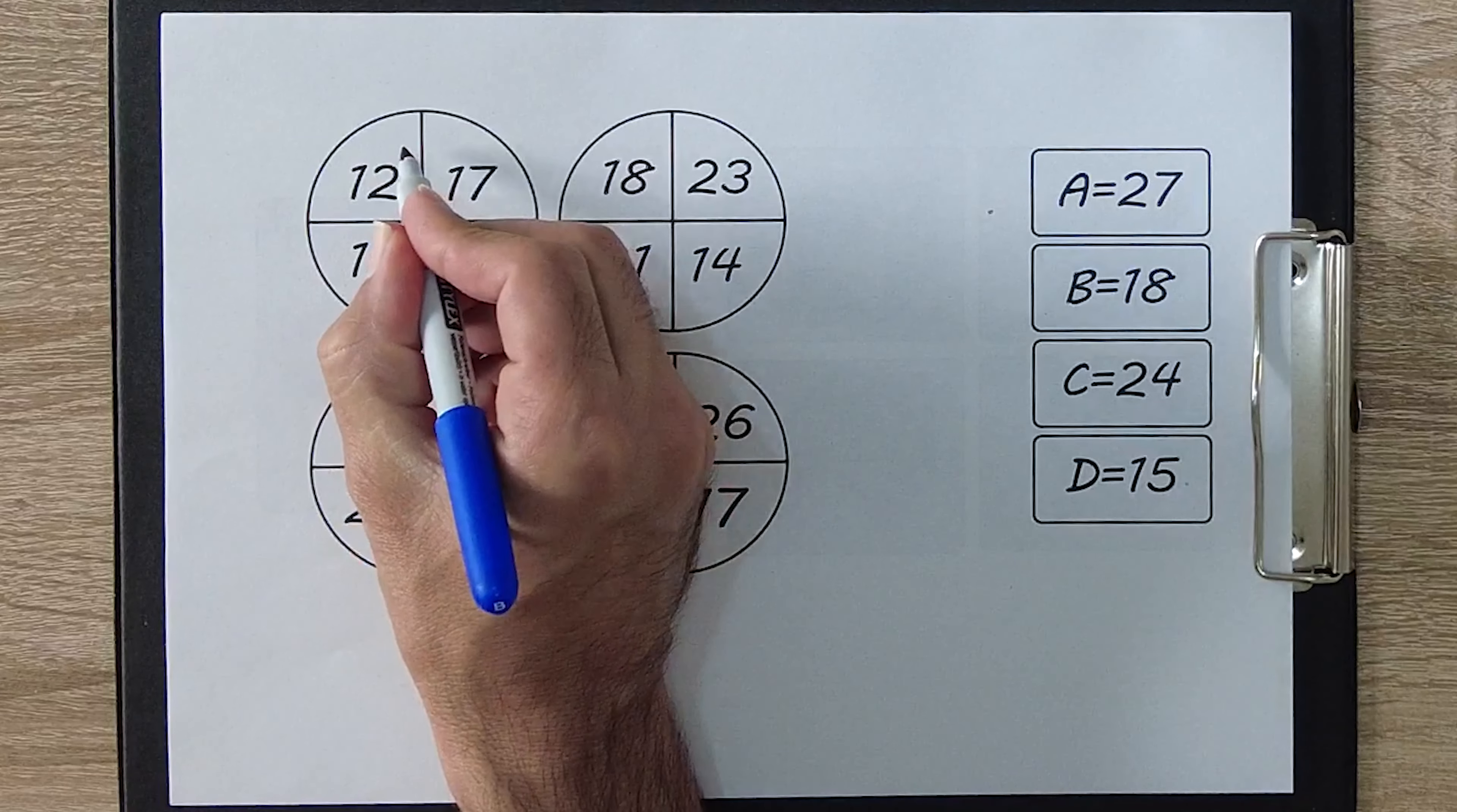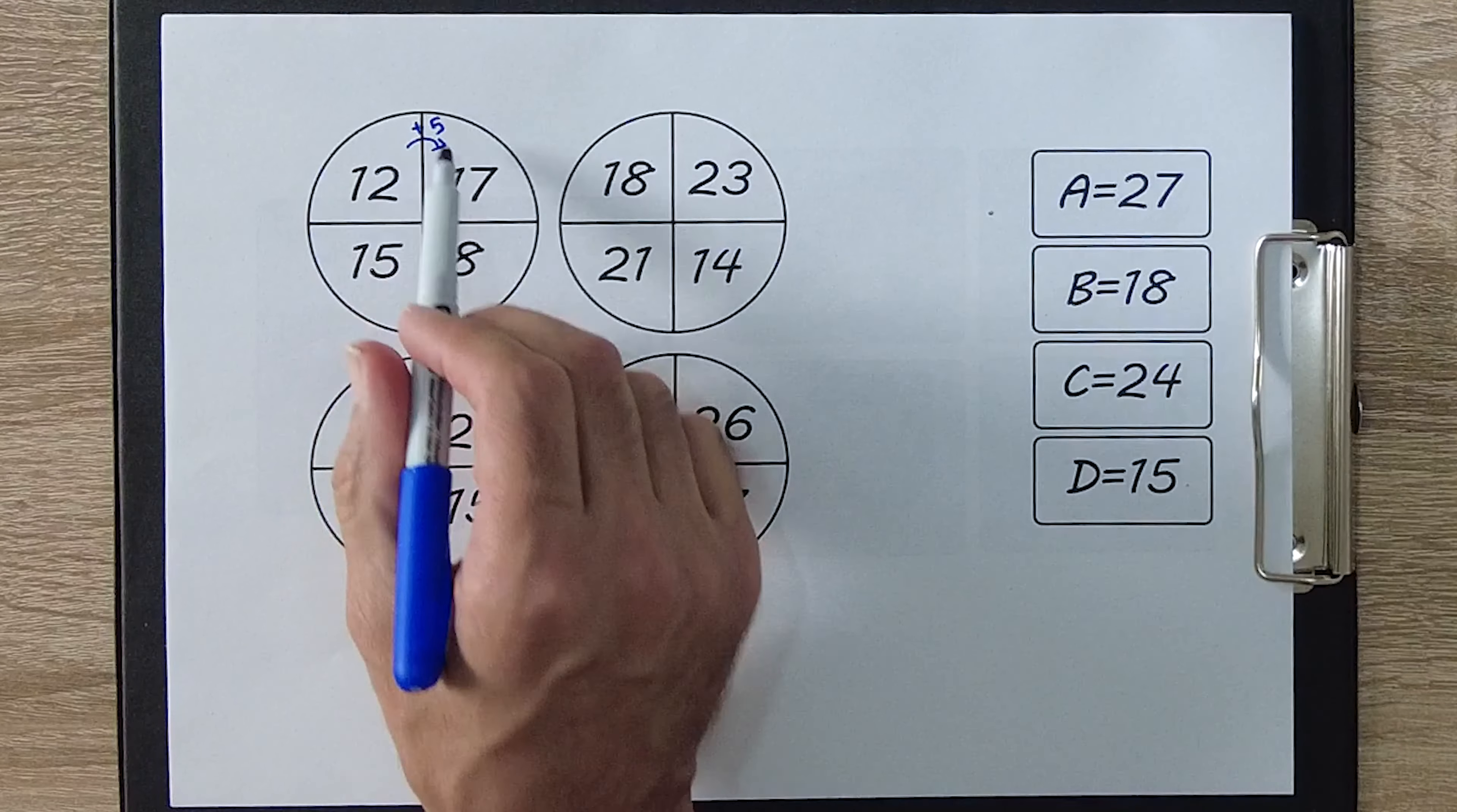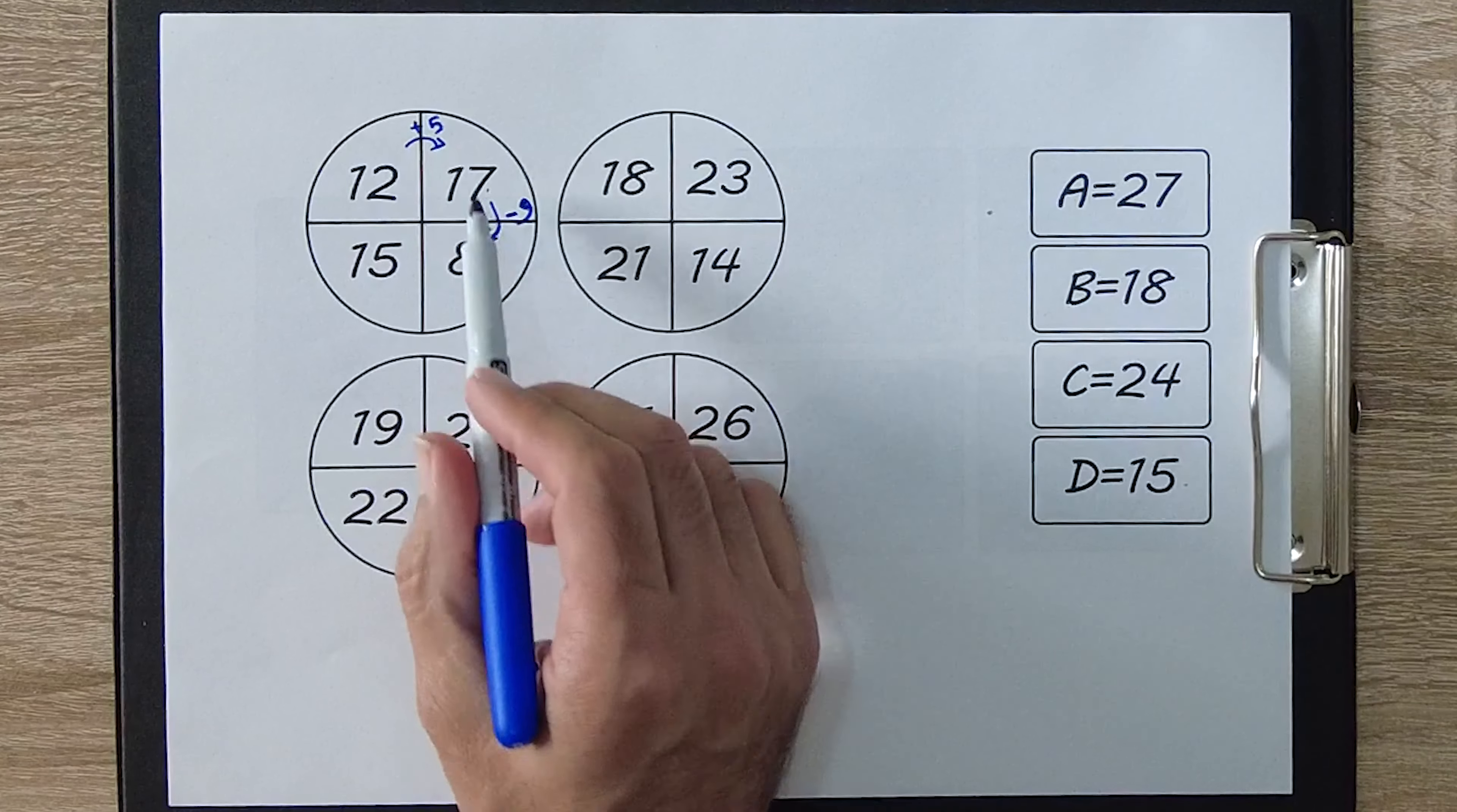To solve this math intelligence test, if we turn clockwise, the numbers are obtained in the following order: first plus 5, then minus 9, and finally plus 7.